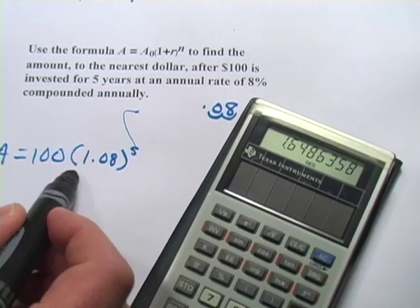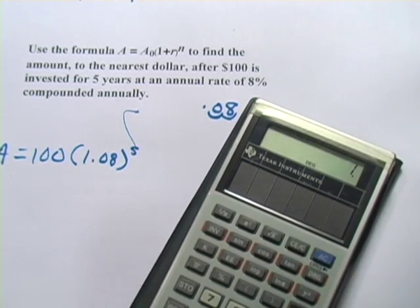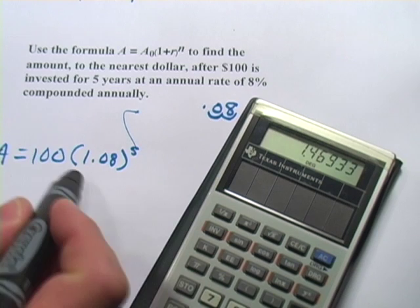So I'm going to use my calculator. I'm going to do this chunk first, 1.08 y to the x, 5 equals. That's what I'm going to multiply by the 100.